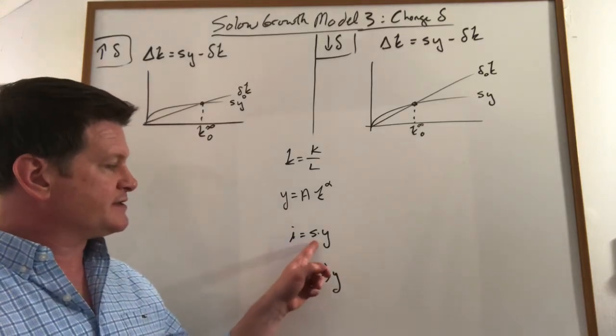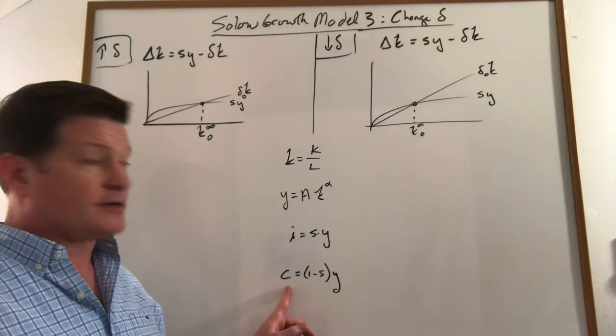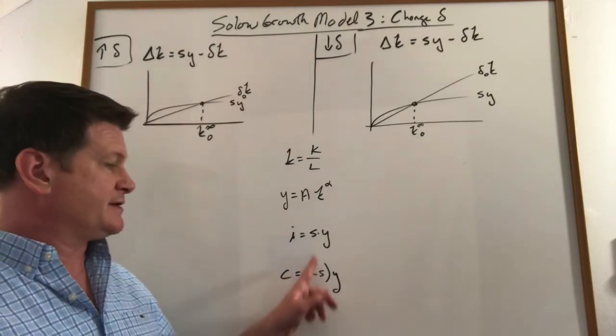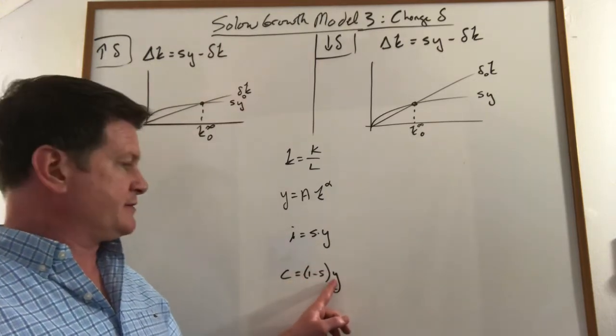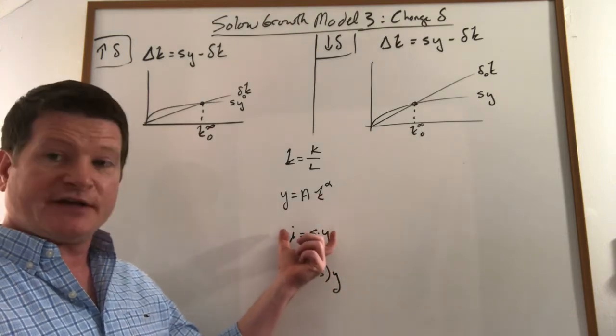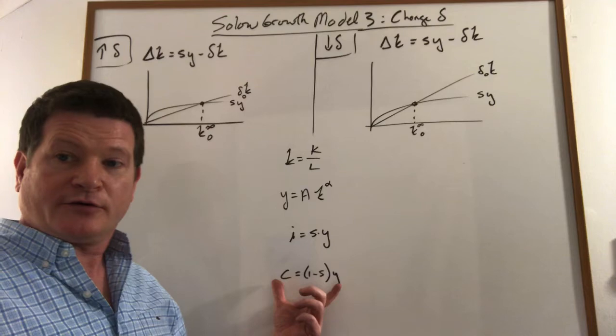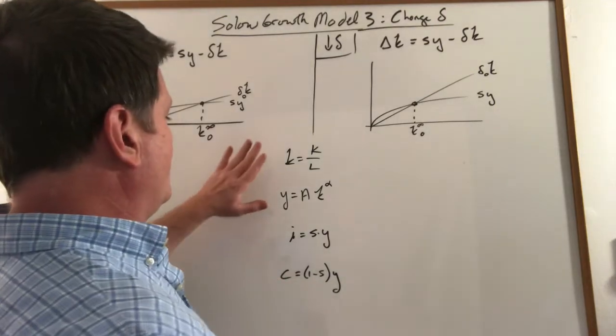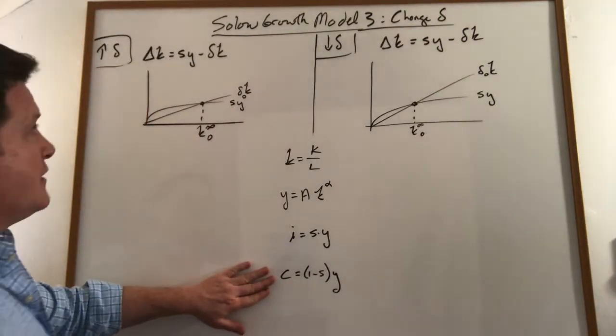Investment is savings times GDP per worker, and consumption per worker is one minus savings times GDP. So out of your income you save a fraction that you invest and the rest of it you consume. Now these are the variables we want to trace out time paths of.